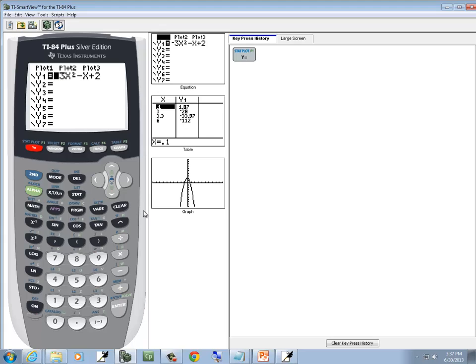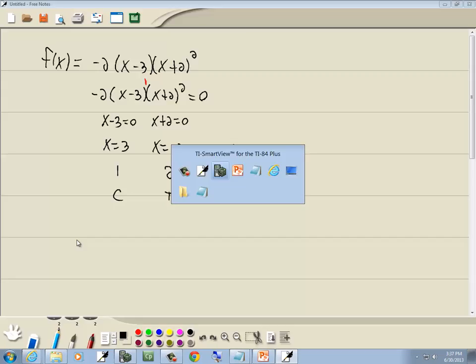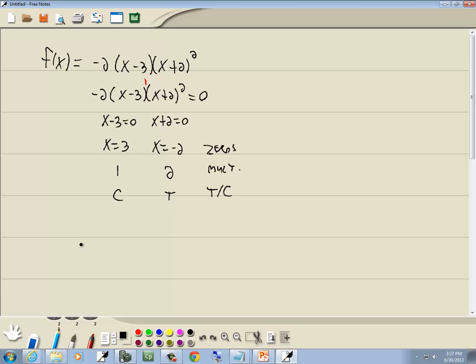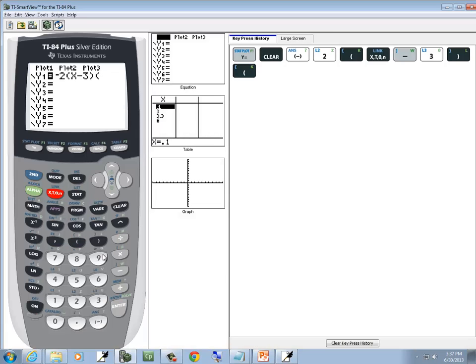So I'll press my y equals, clear, negative 2, beginning parentheses, x minus 3, close parentheses, beginning parentheses, x plus 2, close parentheses, and then my x squared button, and then graph.